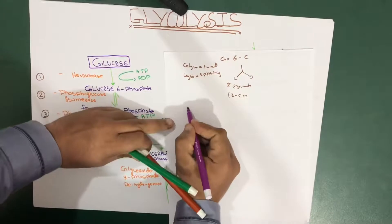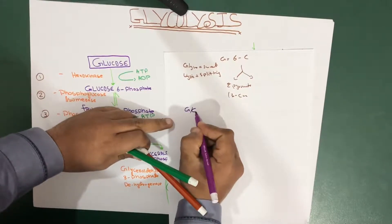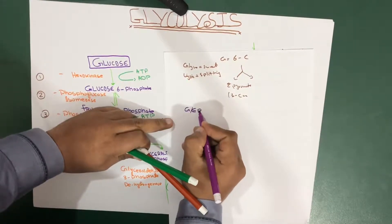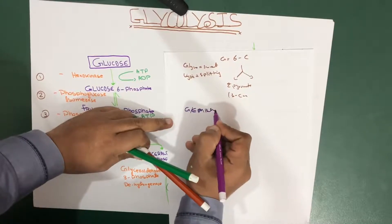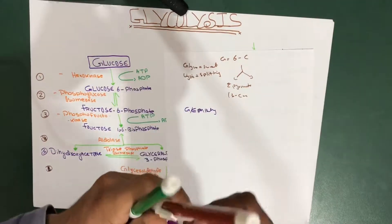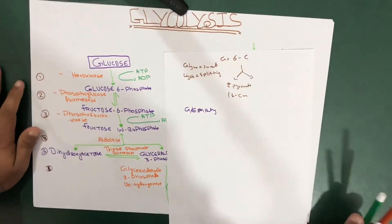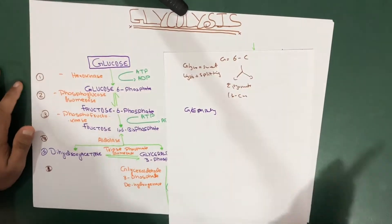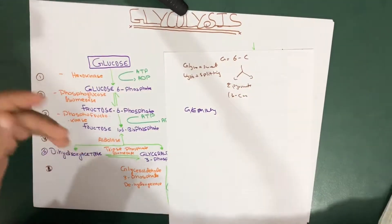Glycolysis is also called the EMP pathway — that stands for the Embden–Meyerhof pathway, named after the scientists who discovered it.